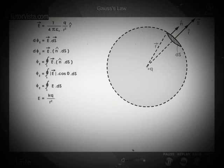We know that E is equal to Kq by R squared. Substituting the value of E in the equation, we get phi E is equal to the surface integral of Kq divided by R squared dot vector ds.